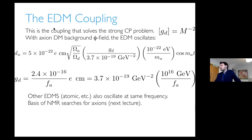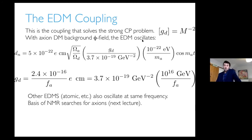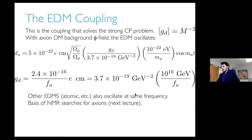I want to talk about the electric dipole moment coupling. This is the coupling for the QCD axion that has to be there — the one that solves the strong CP problem. It has mass dimension minus two, and we have the background axion dark matter field oscillating. This means the EDM is oscillating — that's the prediction of the axion model. The dark matter field corresponds to oscillations in the neutron electric dipole moment, oscillating with frequency given by the axion mass and value set by the dark matter density. Other EDMs like atomic EDMs are also induced and oscillate at the same frequency. This is the basis of NMR searches for axions.